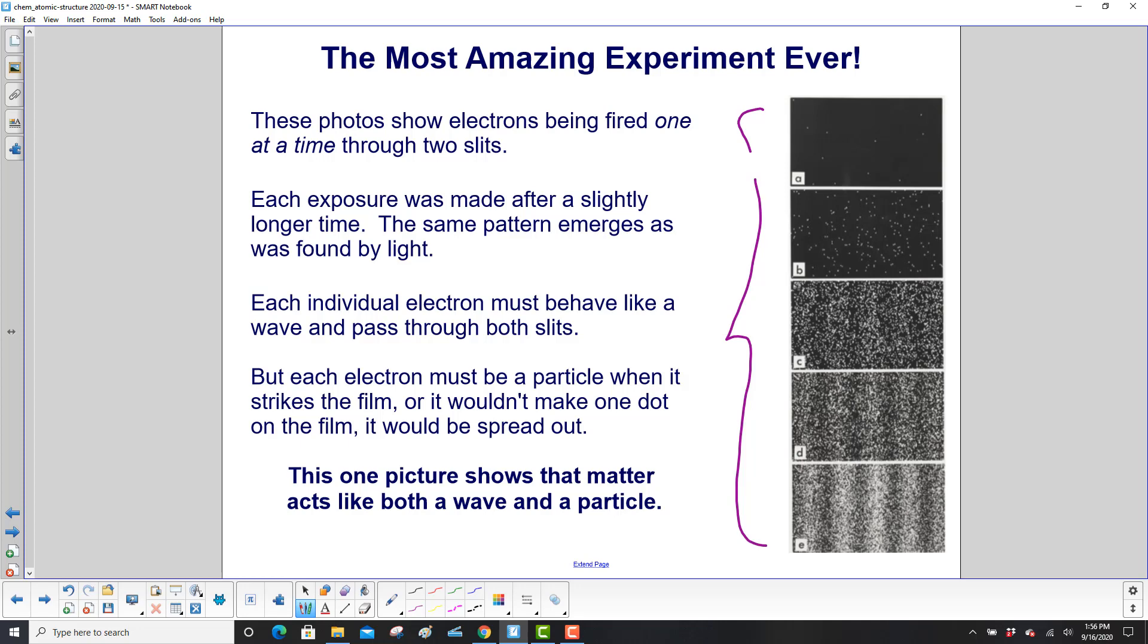Each exposure was made after a slightly longer time. The same pattern emerges as if light was going through the double slits. This indicates that each individual electron must behave like a wave and pass through both slits.